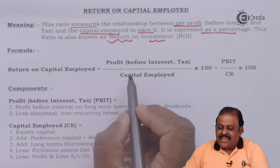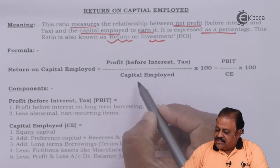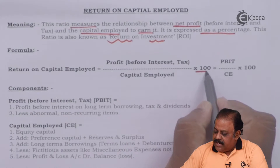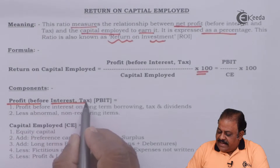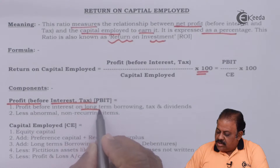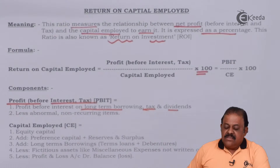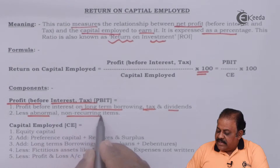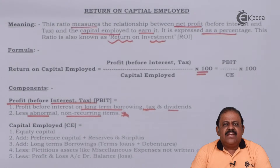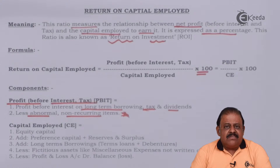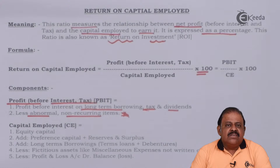Return on capital employed is calculated as profit before interest and tax divided by capital employed, multiplied by 100. Components: profit before interest and tax (PBIT) — profit before interest on long-term borrowings, tax and dividends, less abnormal and non-recurring items. When calculating this ratio, profits may have been affected by some abnormal losses in that particular year, so we are required to remove the effect of abnormal items to get the proper amount of return on total resources.